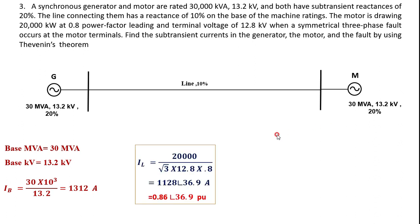One more parameter to calculate is the load current. The load is 20,000 kW at 0.8 power factor leading at 12.8 kV. The load current IL equals total power divided by root-3 times line voltage times power factor, giving 1128 amperes at an angle of +36.9° (positive because it is leading power factor). Converting to per unit by dividing by the base current of 1312, the load current is 0.86∠+36.9° per unit.